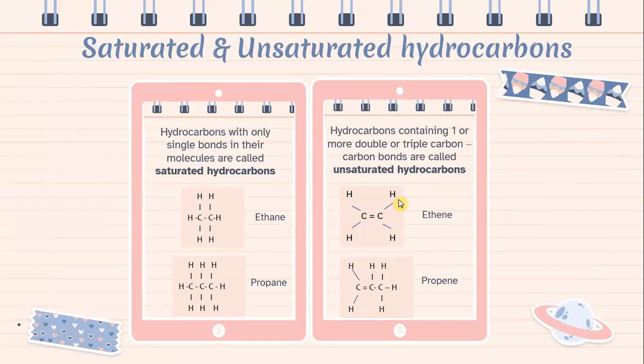Saturated and unsaturated hydrocarbons. Hydrocarbons with only single bonds in their molecules are called saturated hydrocarbons — examples are ethane and propane. Hydrocarbons containing one or more double or triple carbon bonds are called unsaturated hydrocarbons — examples are ethene and propene.